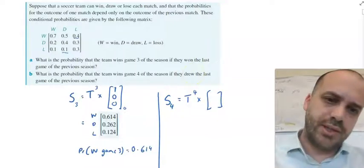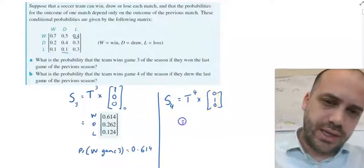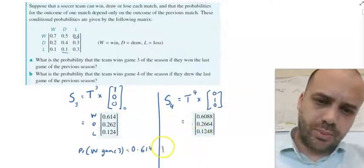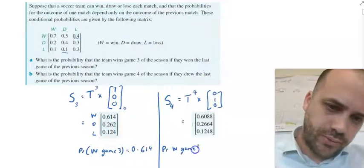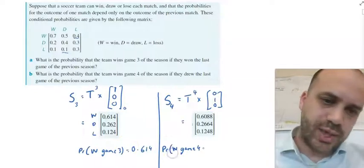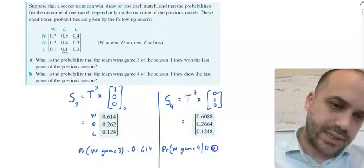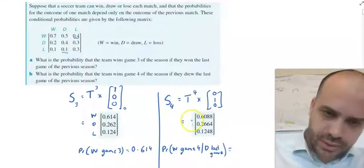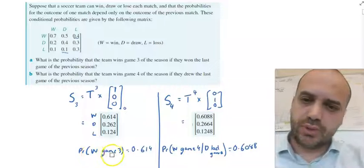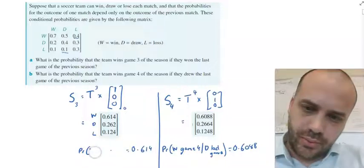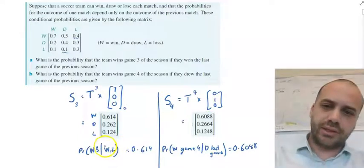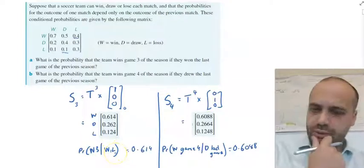Transition matrix to the power of 4 times the state matrix, but it says they drew the last game. So 0, 1, 0, draw is in the middle here. And again, if we type that into our calculator, we're going to get our state matrix in game 4. Our state matrix here, we can say that the probability that they win game 4, I guess I should write the probability that they win game 4 given they draw last game. And that's equal to the win one here, 0.6088. And I suppose I should just rewrite that to be not just winning game 3, but winning game 3 given they won the last game of the season. I'm being very lazy with my shorthand here.